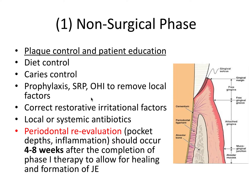If you've done scaling and root planing for all four quadrants, including oral hygiene instruction and maybe fluoride varnish application, after four to eight weeks you can reassess the patient's situation to see if there's been any healing — whether pocket depths have become more shallow or inflammation has been reduced. Sometimes really deep pockets won't heal in four to eight weeks and may require much longer or more involved treatment.